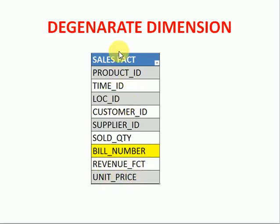Along with other foreign keys, in some rare scenarios you will be adding additional columns like a bill number. If you are going for an order fact, some tables you can find order fact, order transaction fact, order number, order line number. Those columns are actually not related to the fact table, but sometimes we do not want to maintain a separate dimension table for those columns. What we will do, we will maintain those columns also in the fact table. This type of fact will be called Degenerate Dimensions.